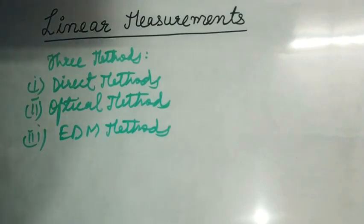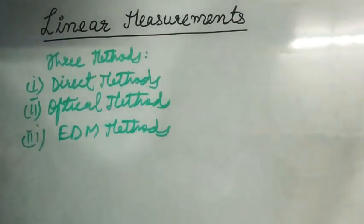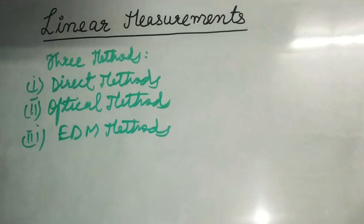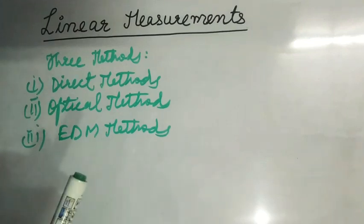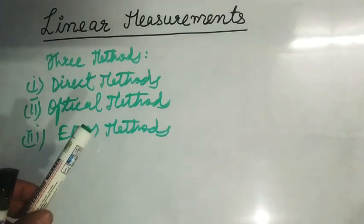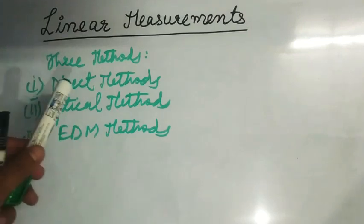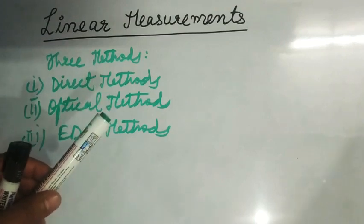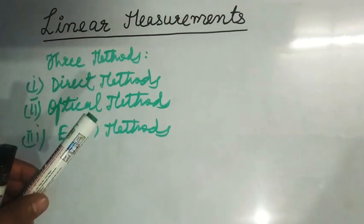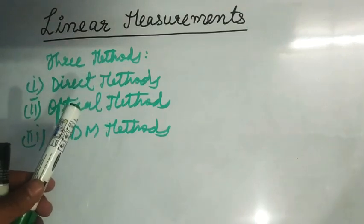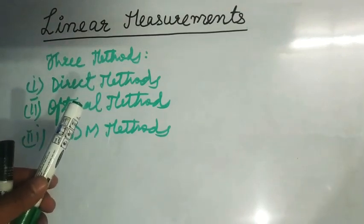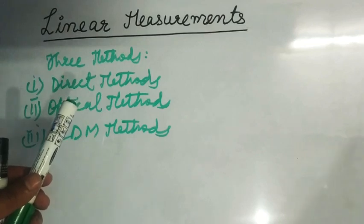What are direct methods? As the name suggests, in direct methods the distance is actually measured in the field using a chain or a tape. These are the most commonly used methods for linear measurements.